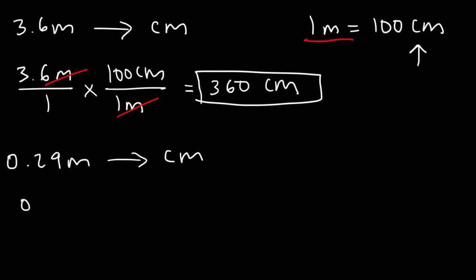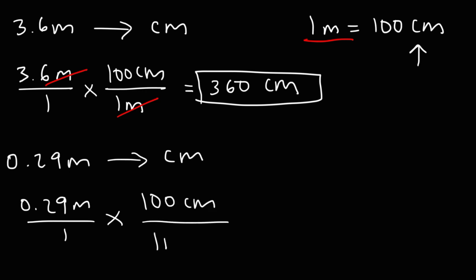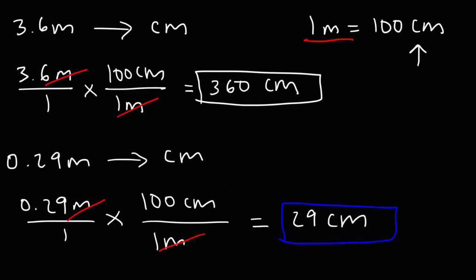So 3.6 meters is equivalent to 360 centimeters. Now let's try the second example. We're going to follow the same setup and multiply by 100 centimeters per 1 meter. These units will cancel, so it's going to be 0.29 times 100. All you have to do is move the decimal two units to the right, and this gives you 29 centimeters. That's all you need to do when converting from meters to centimeters.